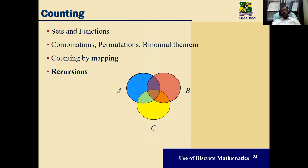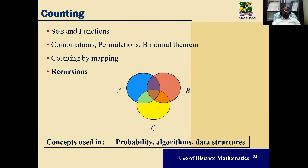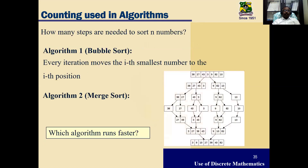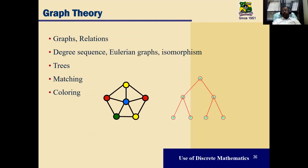In counting theory, functions, combinations, permutations, binomial theorems, counting by mapping, and recursions are used. For example, computing the factorial of a number uses recursion theory. These are used in probability, algorithms, and data structures. Counting is used in algorithms to determine how many steps are needed to sort n numbers. Various sorting methods exist — bubble sort, selection sort, insertion sort, quick sort, bucket sort, merge sort — and number theory helps determine which algorithm is faster.